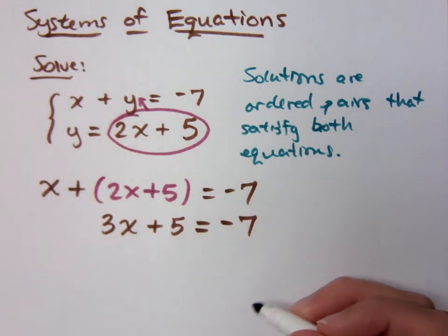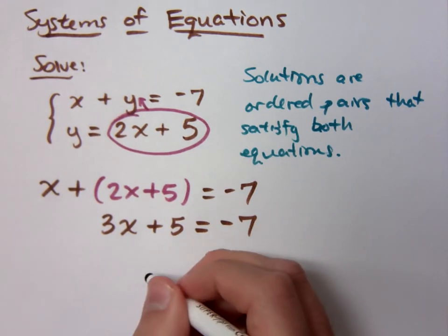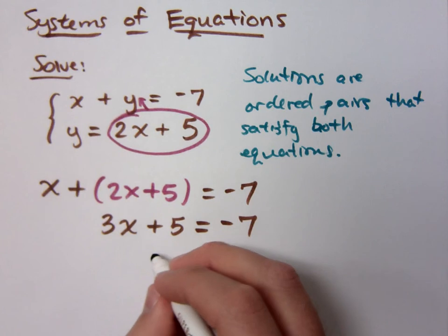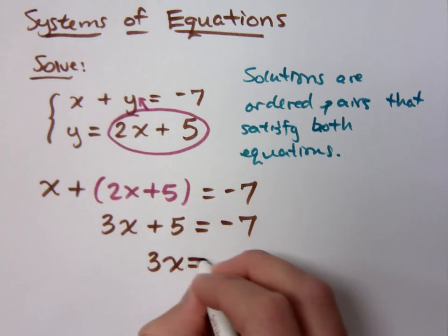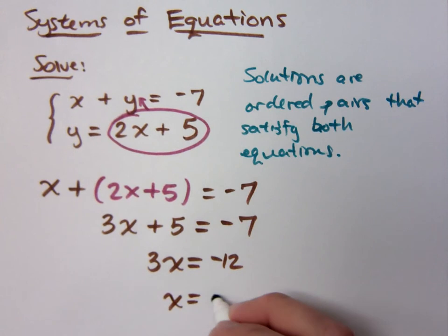3X plus 5 equals negative 7. Which means what? Minus 5. Negative 12. 3X equals negative 12. X equals negative 4. X equals negative 4.